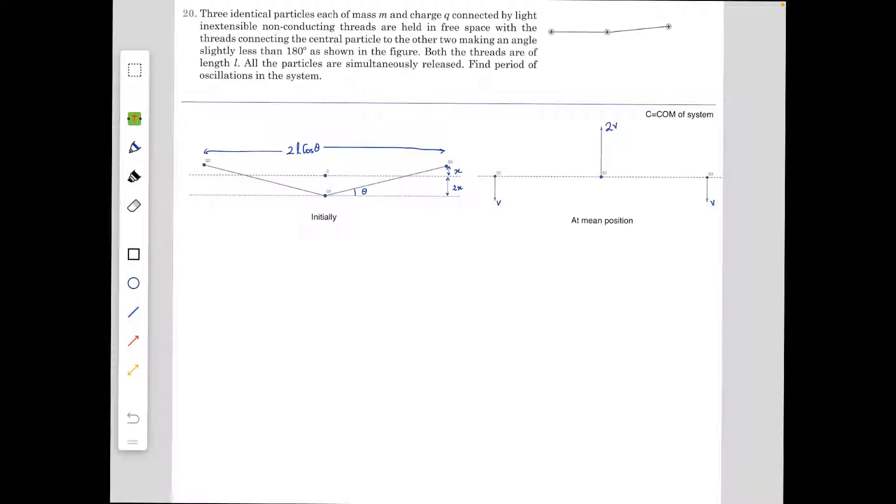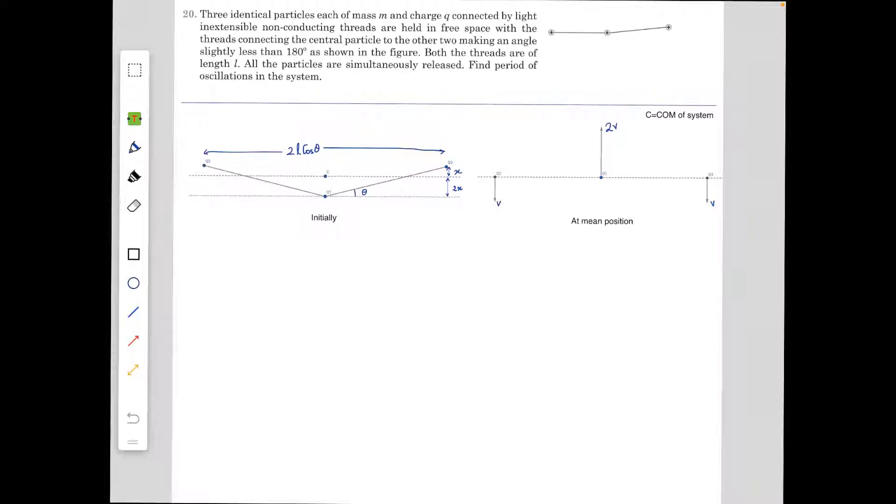Here are identical particles, each of mass M and charge Q, connected by light inextensible non-conducting threads held in free space with the threads connecting the central particle to the other two making an angle that is slightly less than 180 degrees as shown in the figure. Both the threads are of equal length. All particles are simultaneously released. Find the period of oscillations in this system.